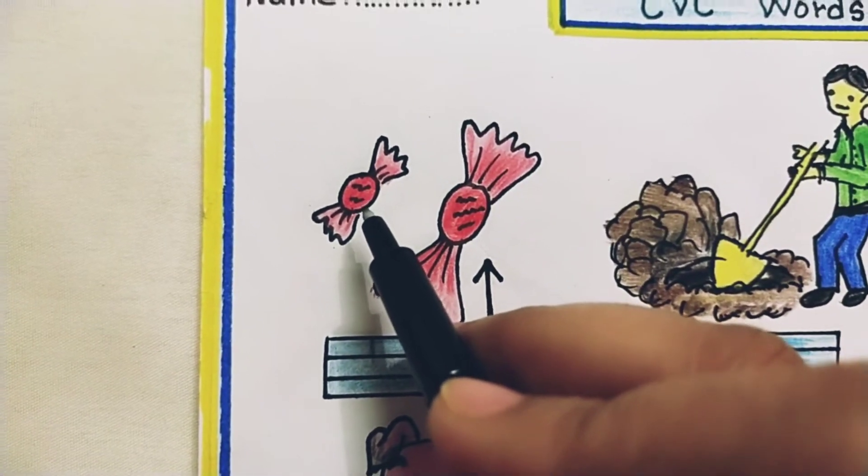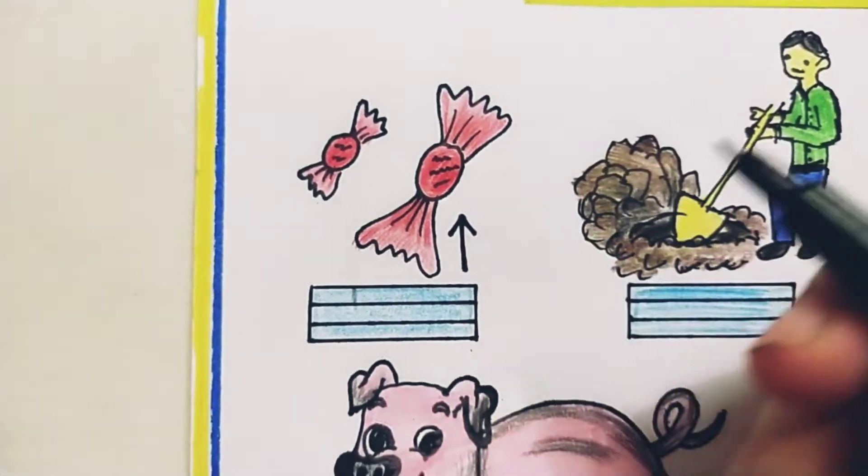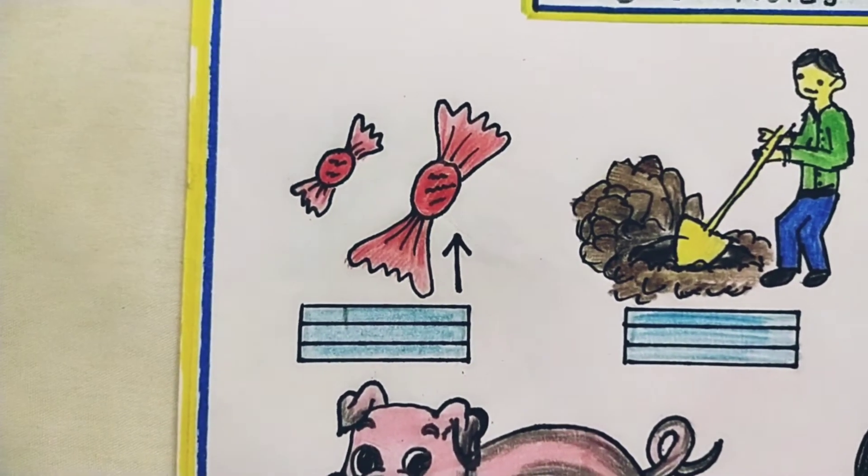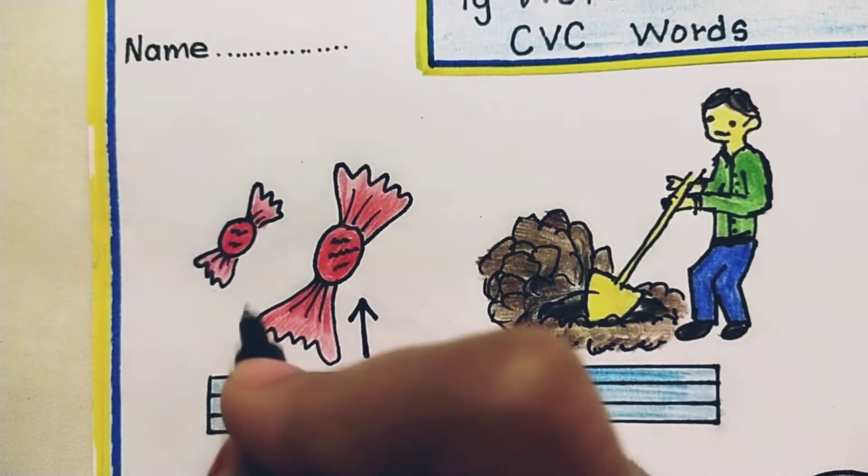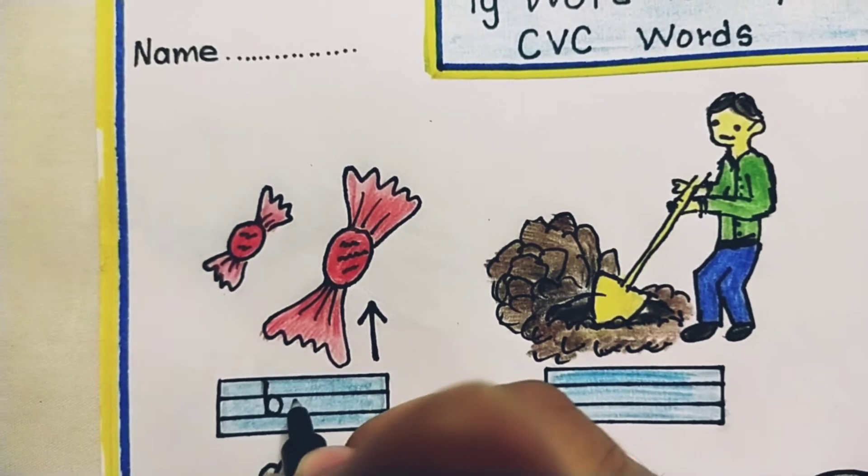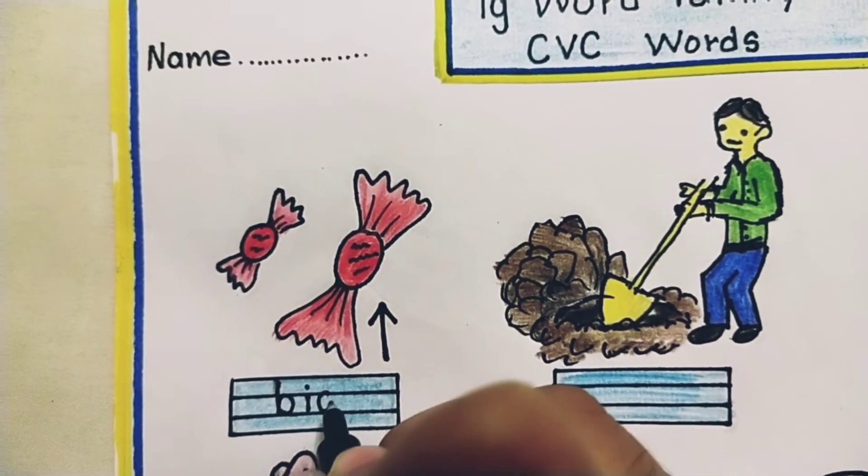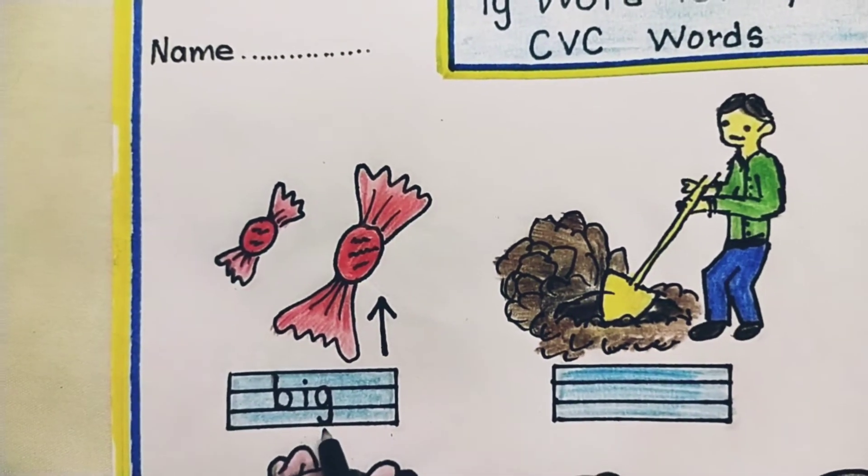There are two toffees. One is small and another is big. Repeat after me. Big. B-ig. Big.